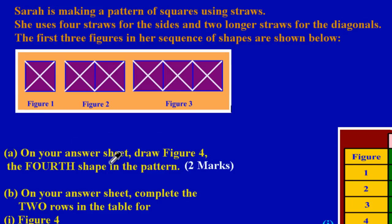Now in part A they're saying on your answer sheet, draw figure number 4, the fourth shape in the pattern, and that's an easy two marks. If we are required in part A to draw figure 4, first let's analyze the first three figures in the pattern. If you notice the first figure, the boundaries take four straws, and I'm running my pointer around the boundaries, and then you see the two diagonals.